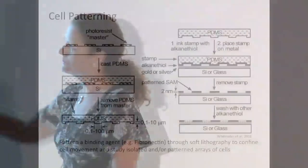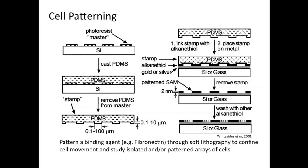How does cell patterning work? We make something that looks like an ink stamp out of rubber — PDMS, which is silicone rubber, the same stuff you might seal windows or an aquarium with, basically bathroom caulk. We stamp the PDMS into the protein of interest, then stamp it onto the bottom of a petri dish or glass slide, and that's how we get cells into those pretty patterns.